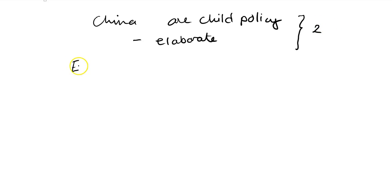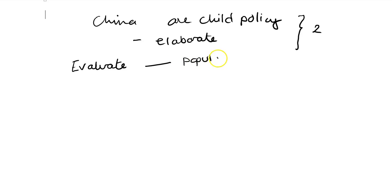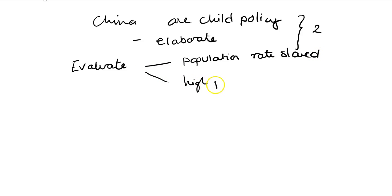Remember that you've got to evaluate. You might be looking for two evaluation points here. So it's been very successful — the population growth rate has slowed. But you still have a high population. You also have an aging population, which has led to them discussing perhaps no longer having the one child policy, but allowing people to have two children.